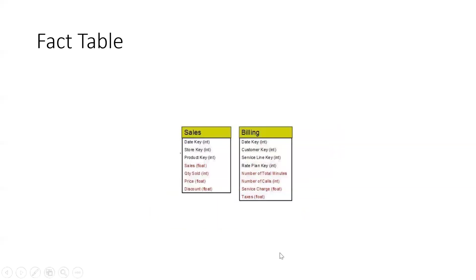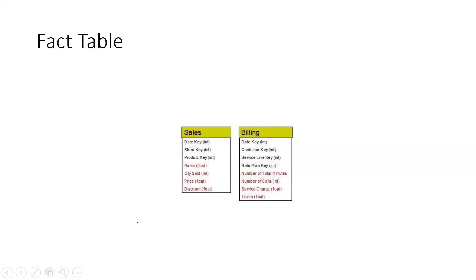If we store fact values in a table, that table is called a fact table. Two examples are given — a sales table and a billing table — both are fact tables because we generally store numerical values there. The red-highlighted columns are the numerical facts. Apart from that, other columns in black — like date key, store key, product key, and in the second table date key, customer key, service line key, red plan key — all have a 'key' keyword, meaning those are foreign keys or primary keys of that table.